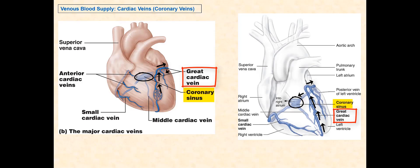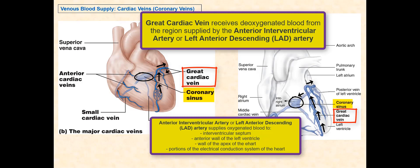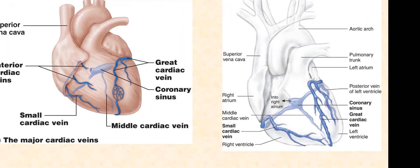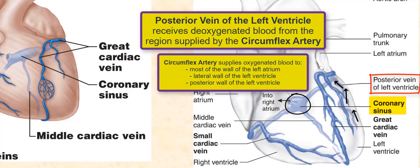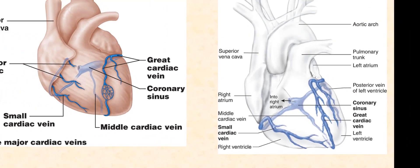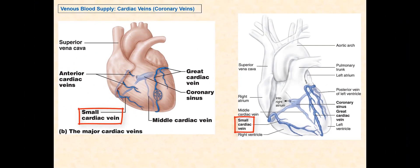The great cardiac vein receives deoxygenated blood from the region supplied by the anterior interventricular artery, or the left anterior descending artery. The posterior vein of the left ventricle is found posteriorly and converges with the coronary sinus. It receives blood supplied by the circumflex artery.